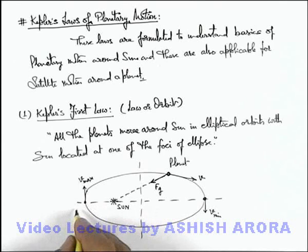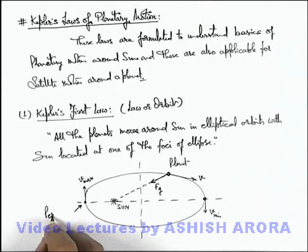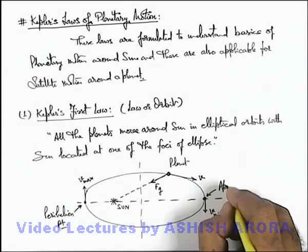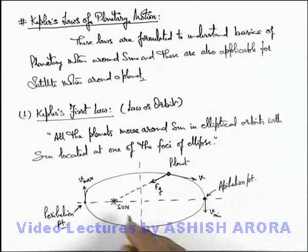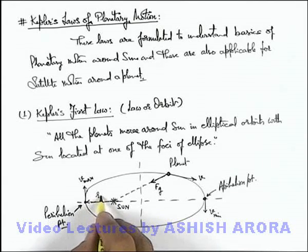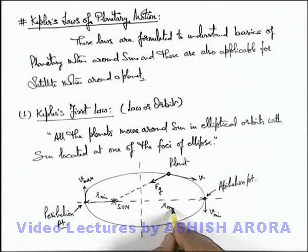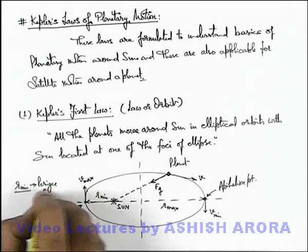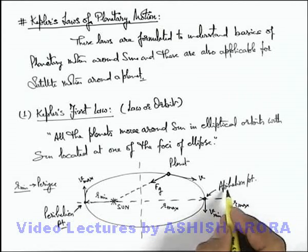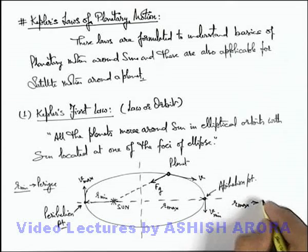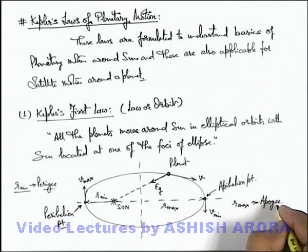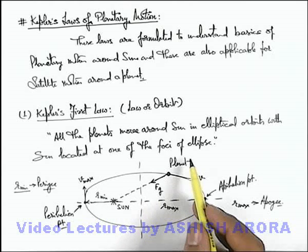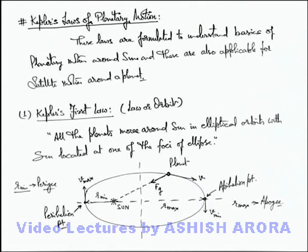With respect to the sun, the nearest point is termed as the perihelion point, and the farthest point is termed as the aphelion point. These distances of the planet with respect to the sun — this is r minimum, and the other distance which is r maximum — the minimum distance is termed as perigee, and the maximum distance, the distance of the aphelion point with respect to the sun, is termed as apogee. So this is Kepler's first law, which states that a planet revolves around the sun in an elliptical orbit with the sun located at one of the foci of the ellipse. It is just a theoretical statement which is termed as the law of orbits.